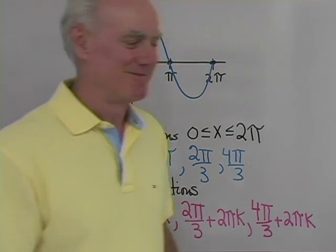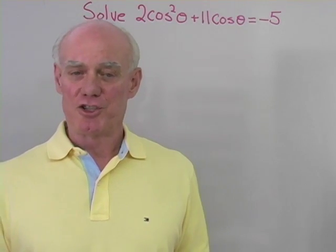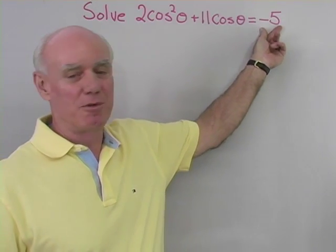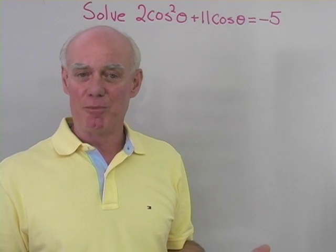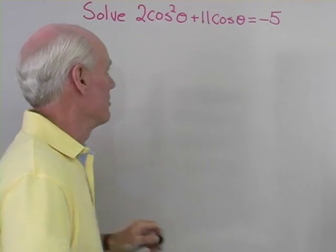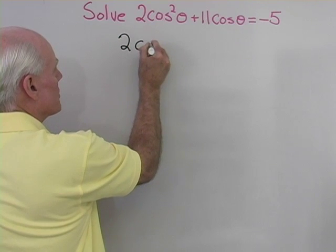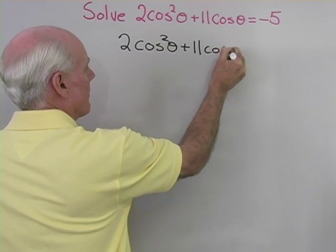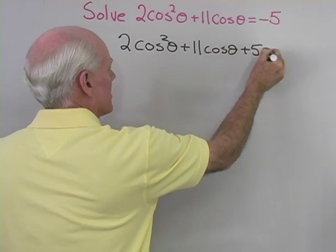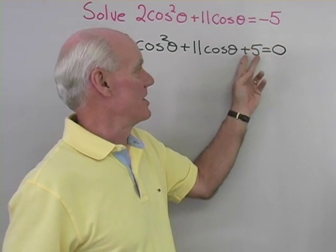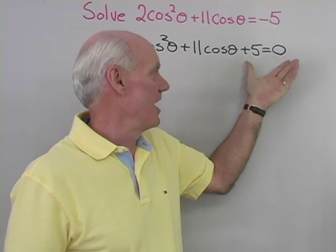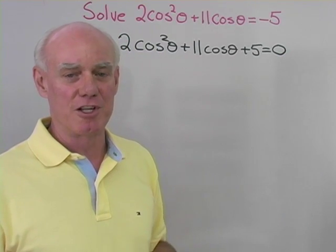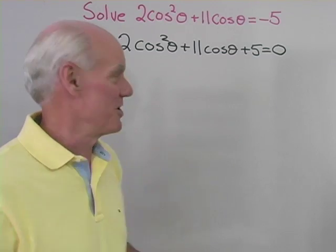Let's look at another problem. Here I have an equation that's quadratic in cosine theta: 2 cosine squared theta plus 11 cosine theta equals negative 5. It looks like a quadratic equation, so I'll put it in standard form to see if it factors: 2 cosine squared theta plus 11 cosine theta plus 5 equals 0.